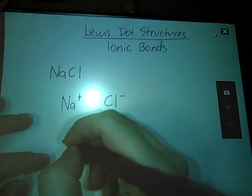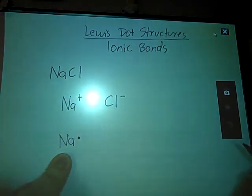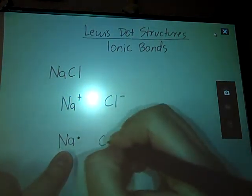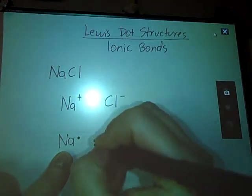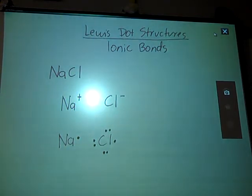Since this is an ionic bond, once again, we have electrons actually being transferred. So sodium ordinarily has one valence electron. Chlorine has seven. So we have one unpaired electron on that chlorine.